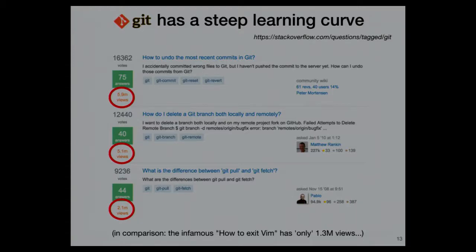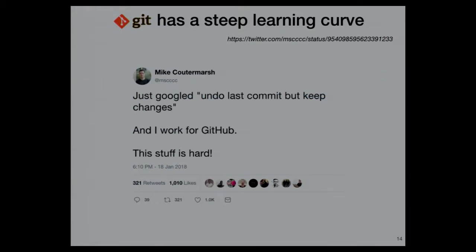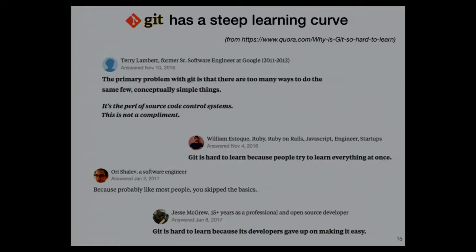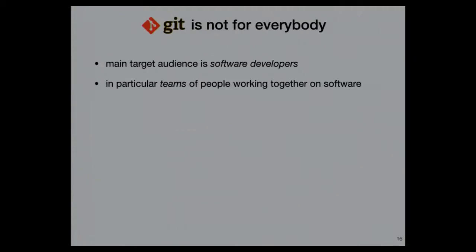The question about git pull versus git fetch has six million views, while 'how to exit vim' only has 1.3 million views — so people seem to have a lot more problems with Git. Even a guy who works at GitHub had to Google how to undo his last commit. On Quora, someone asked why Git is so hard to learn, and someone replied it's 'the Perl of source control systems' — which is not a good thing. Git is also not for everybody — its main target audience is software developers.